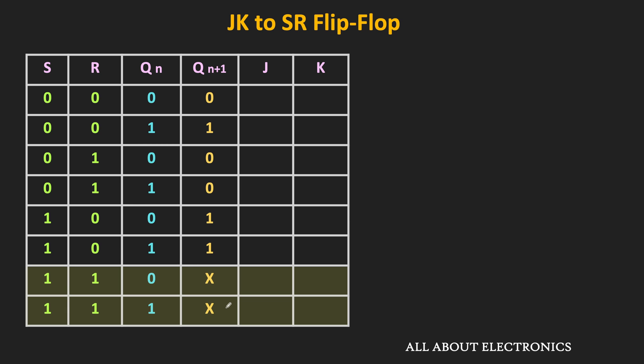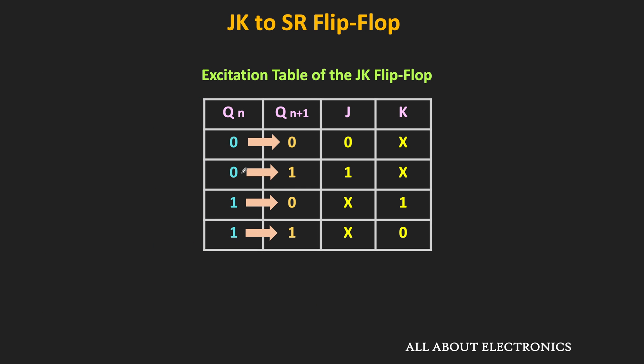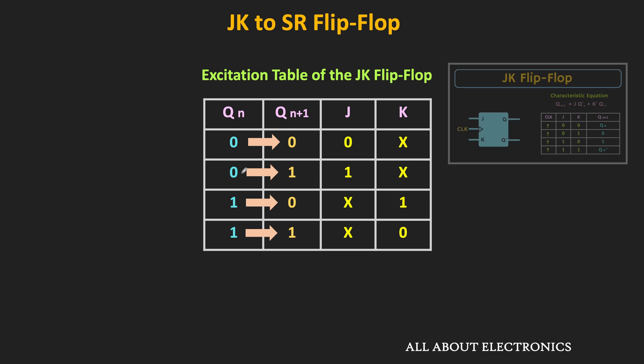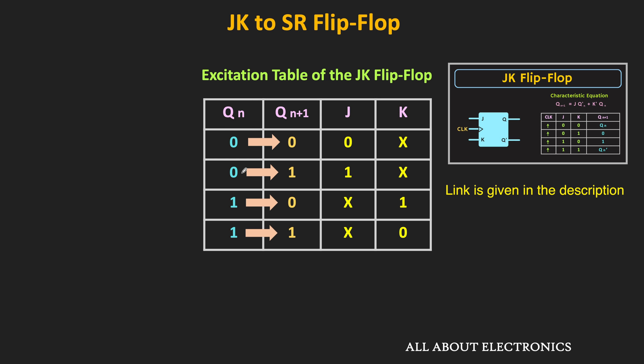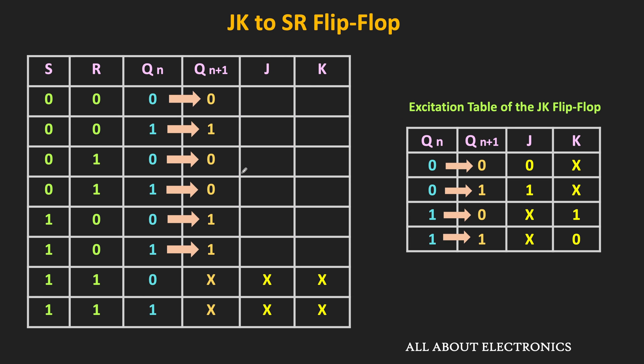For the last two input combinations, it doesn't matter what the J and K inputs of the JK flip-flop are, so those J and K inputs are don't care terms. For the remaining output transitions, we need to find the required J and K inputs using the excitation table of the JK flip-flop — as explained in an earlier video. Using this excitation table, we can easily complete the conversion table.